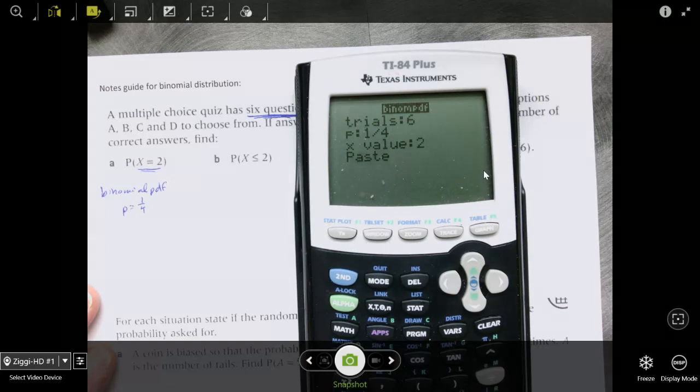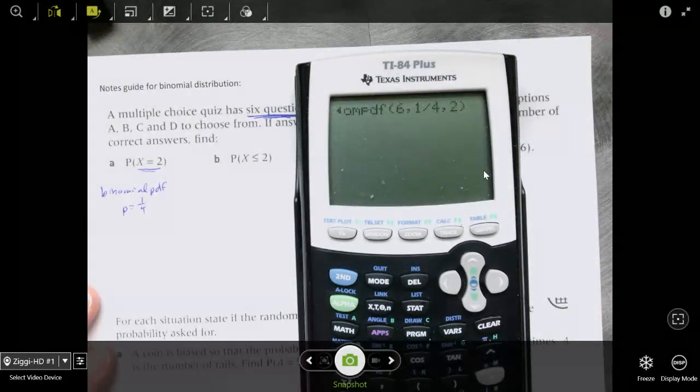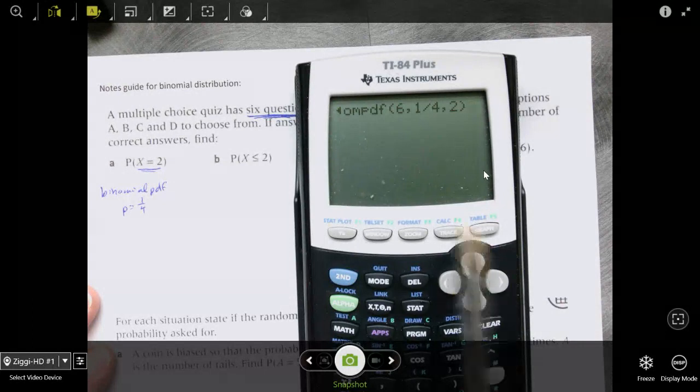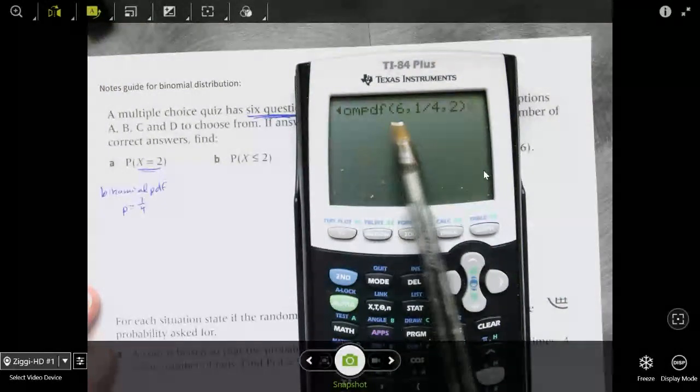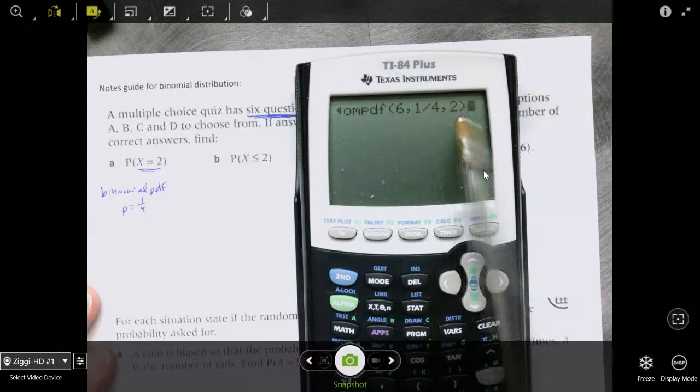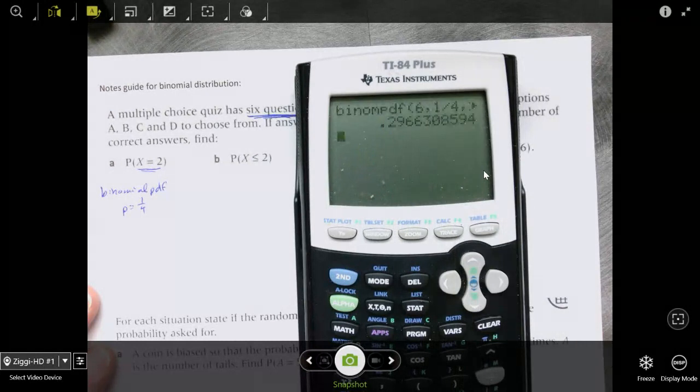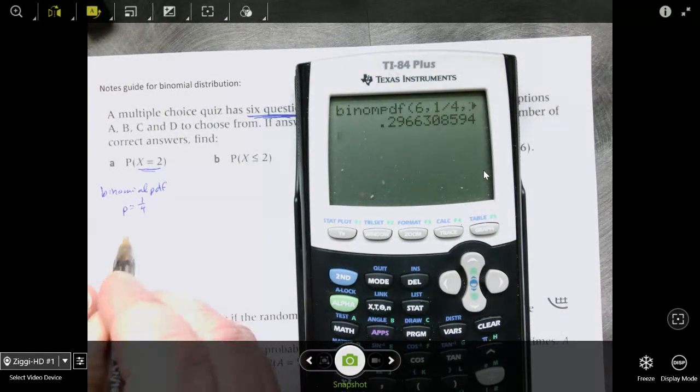And we just enter that in your calculator. And so if you have a TI-83, you would actually enter the 6, 1 fourth, and 2. It will look just like that. And so I hit enter, and I get 0.297. So there's about a 1 in 3 chance, almost a 1 in 3 chance you'll get 2 questions right.